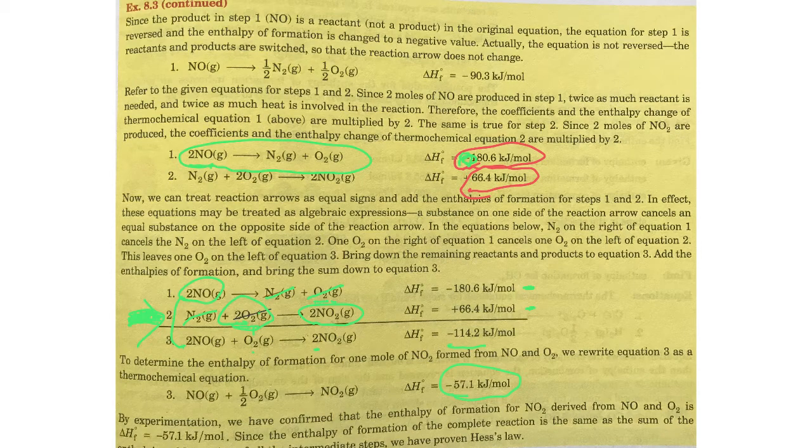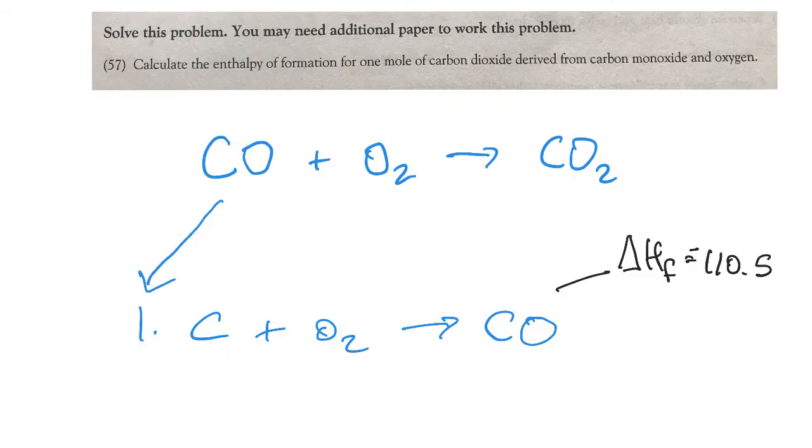All right, now that we've seen some of these steps here on the page and pointed out a couple of those points. Let's try to tackle the problem in the homework together. So the problem tells us that we have one mole, calculate the enthalpy of formation for one mole of carbon dioxide derived from carbon monoxide and oxygen. So remember, oxygen always has to be O2. Now, is this equation balanced? Nope,